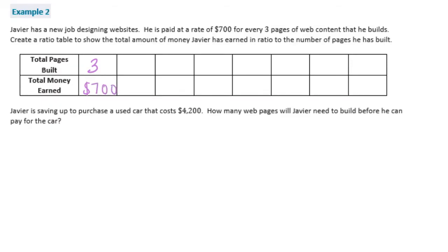So on the next one, if we want to create an equivalent ratio, let's multiply by 2. So 3 times 2, that would be 6 pages built. 700 times 2, he would get $1,400. Now let's multiply it by 3. So 3 times 3 is 9. 700 times 3 is 2,100. So he would get 2,100 for 9 pages.